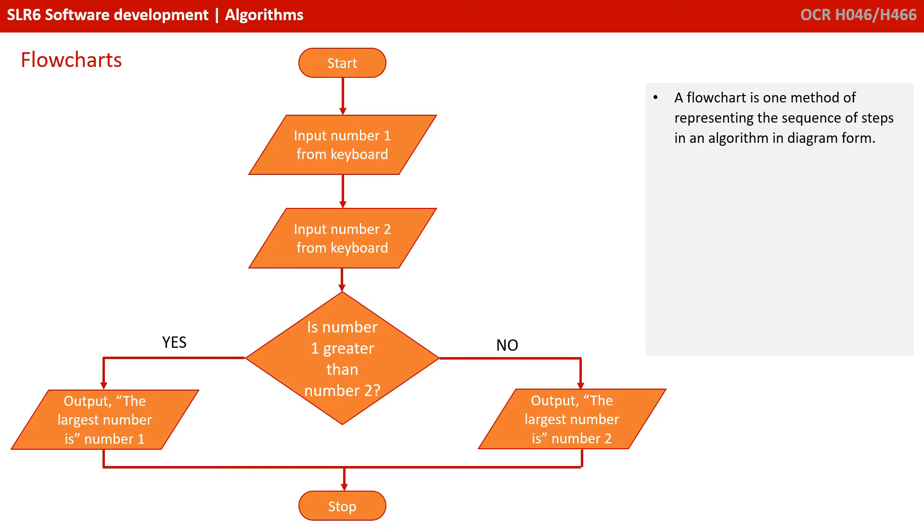A flow diagram, often referred to as a flowchart, is just one way of representing a sequence of steps in an algorithm. Here we can see that we start at the top.